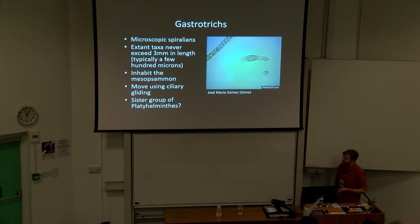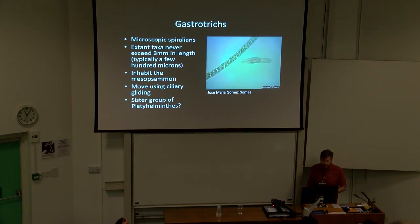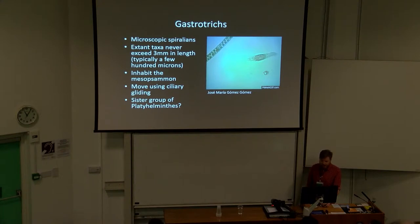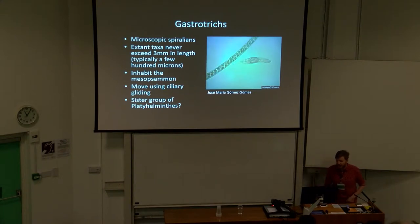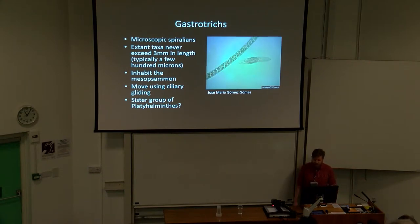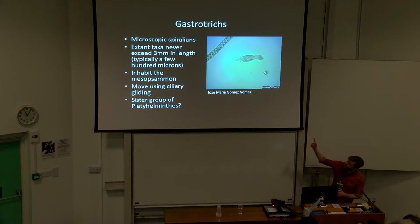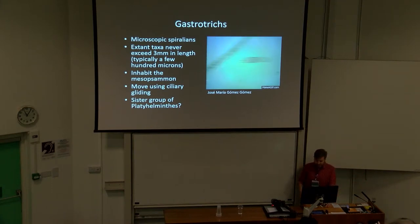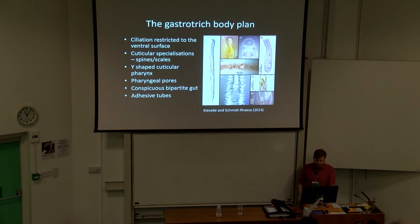Gastrotricha are a group of microscopic spiralians. In the modern, they never exceed three millimeters in length and are typically only a few hundred microns. They inhabit a place called the meiobenthos — the space in between sand grains — where they move around using ciliary gliding, like this handsome chaetonotid we have here in this video. Some phylogenomic studies suggest they might be the sister group of platyhelminths, or the true flatworms.